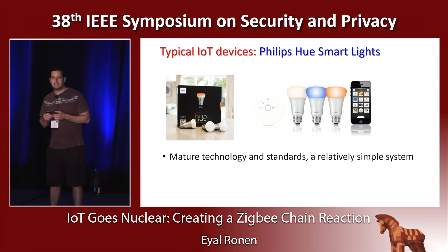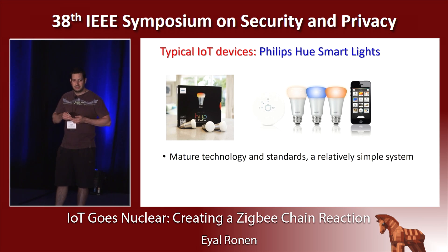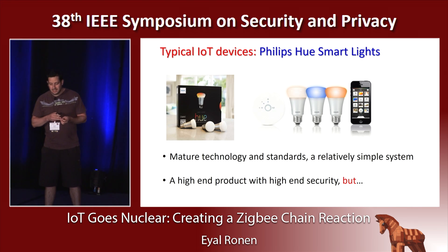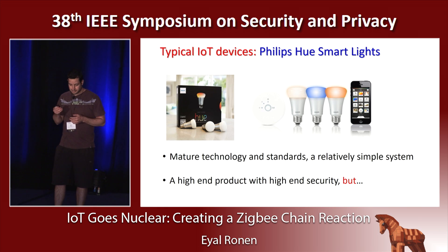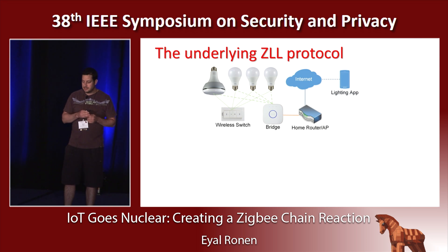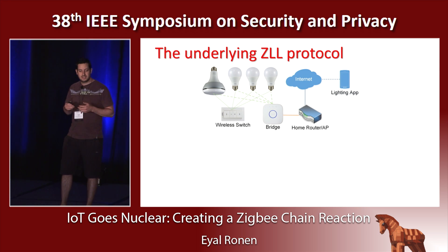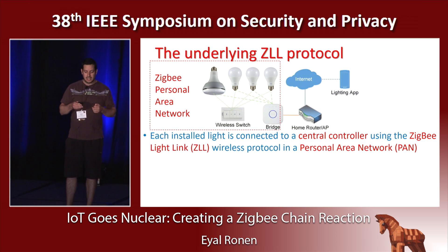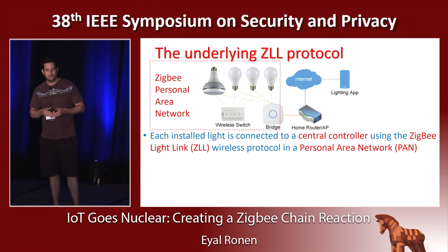We chose this system because it's based on a relatively mature technology with standards that have already undergone several revisions, and it's a relatively simple system to implement. ZigBee is one of the biggest industry standards for IoT, and ZigBee LightLink, or ZLL, is its standard used for light products. A typical home installation includes several light bulbs that can communicate with each other and a controller over this ZLL wireless protocol in something called a personal area network, or PAN, which uses encryption with a unique key to protect the communication.